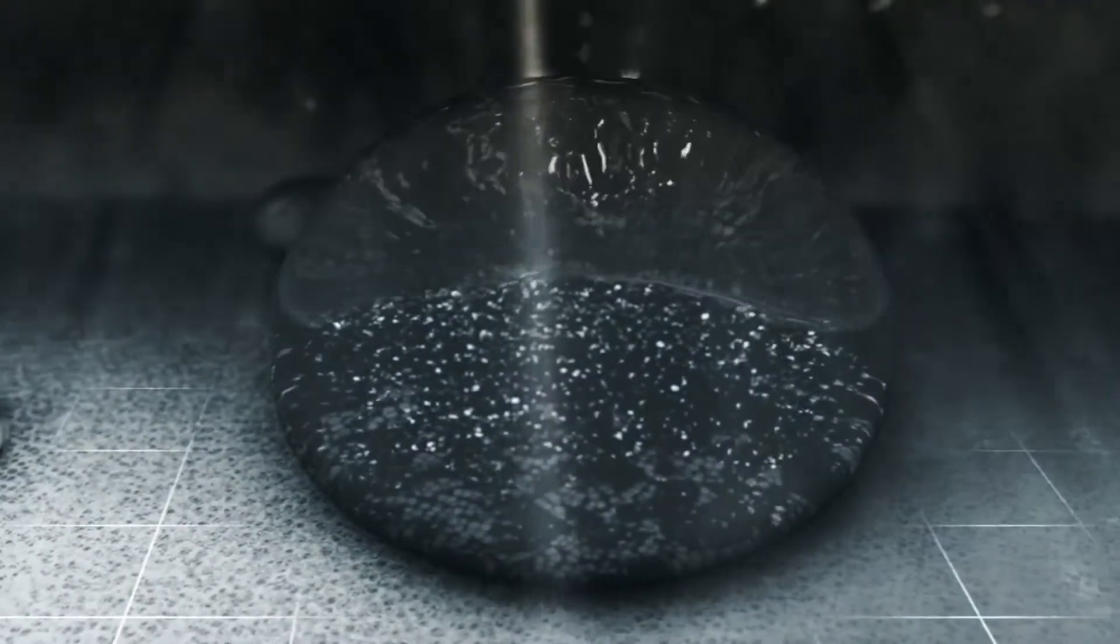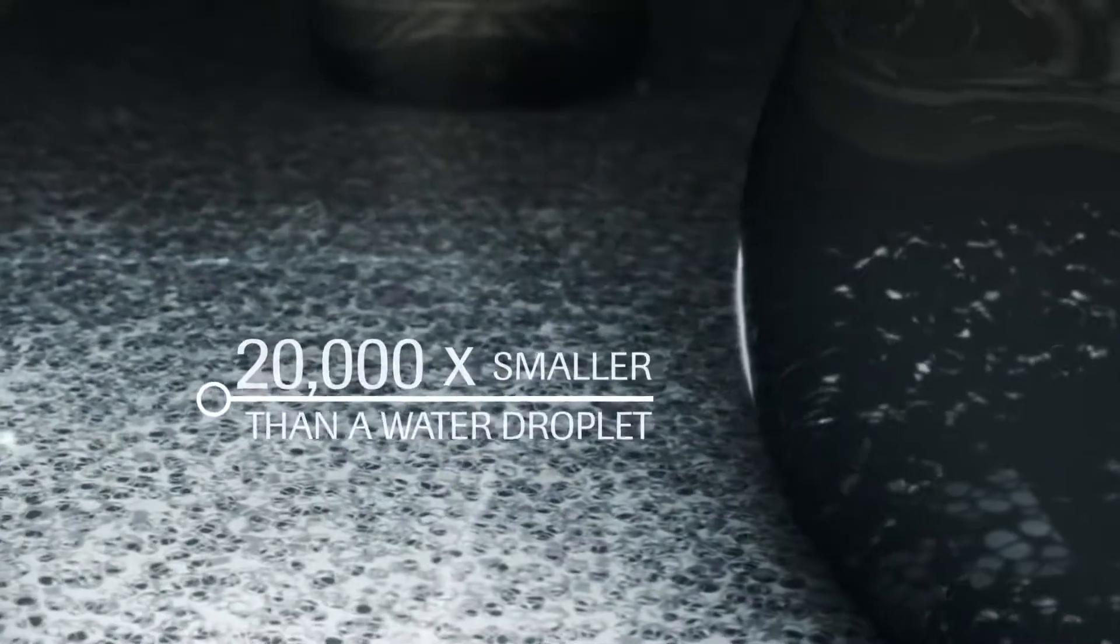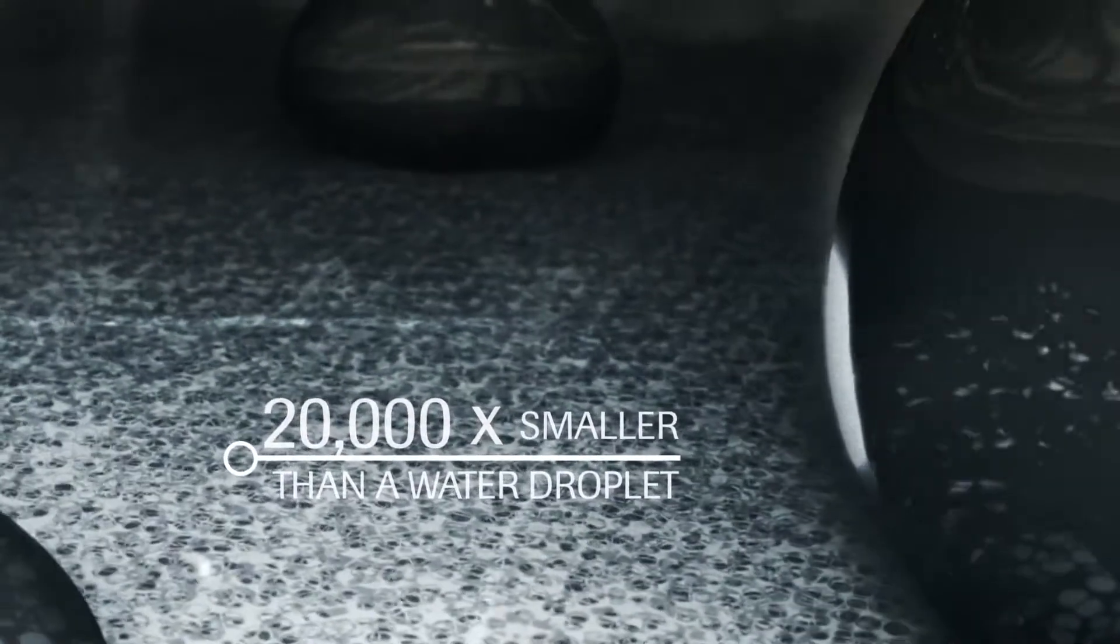Each square inch of a Gore-Tex membrane contains 9 billion pores. Each microscopic hole is 20,000 times smaller than a water droplet, making it impossible for rain, snow, and sleet to pass through.